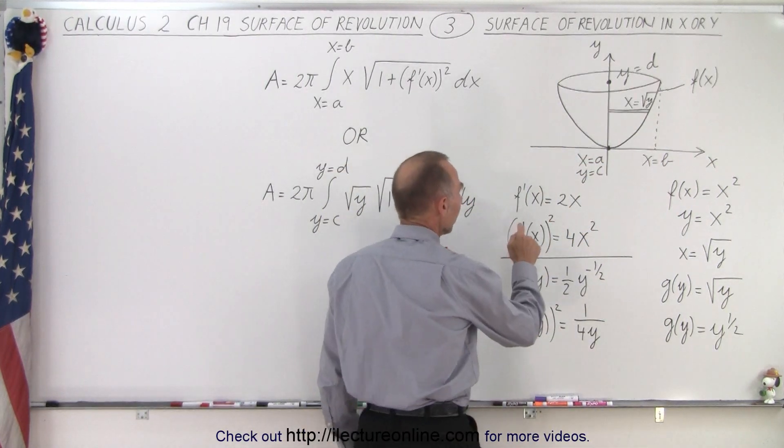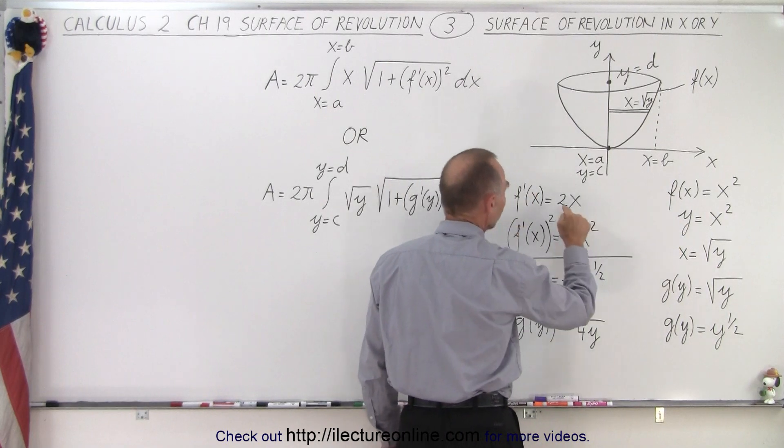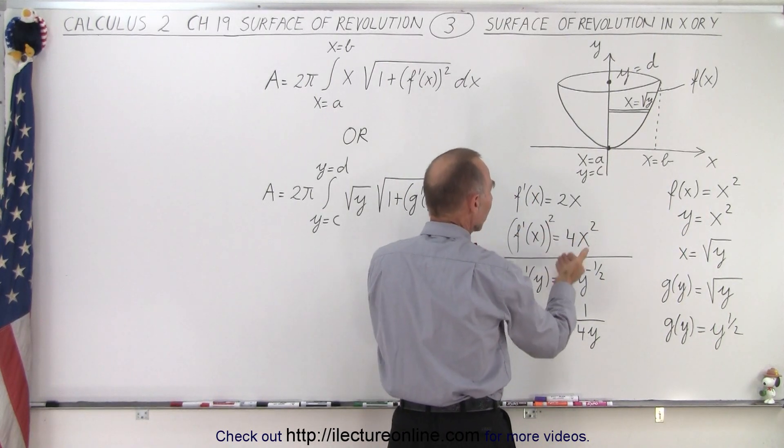So then if we take the derivative of f(x), we get 2x, and if we square that, we get 4x squared.